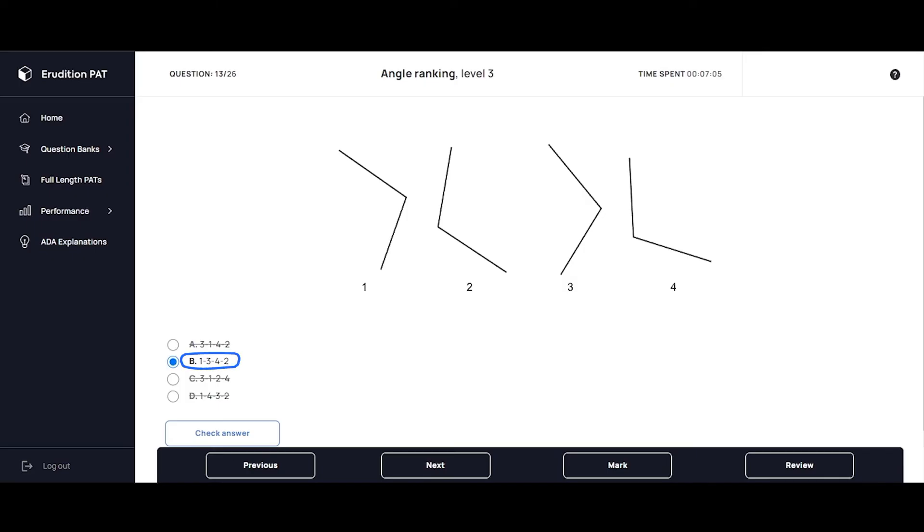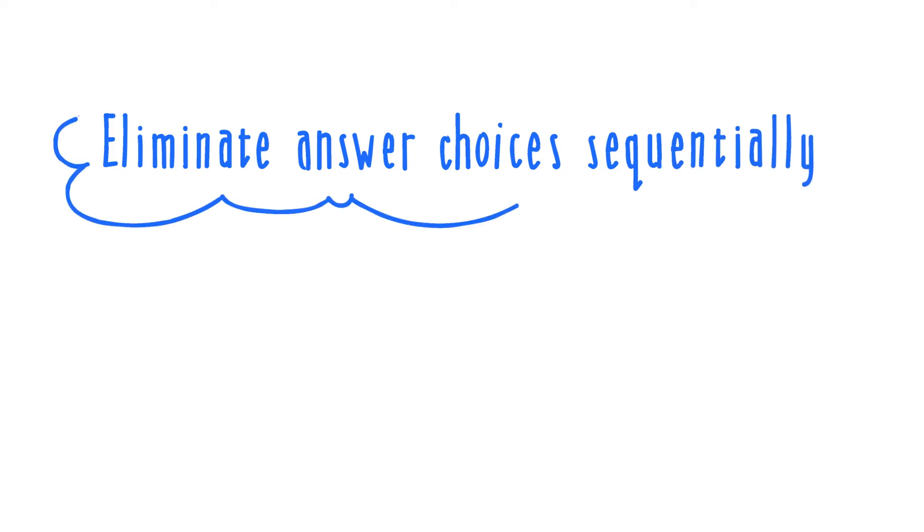Alright, so to summarize, you want to focus on using elimination. Cross out any wrong answers as you go through your process. This will help you from getting overwhelmed and confused. When you're approaching a problem, you want to start by identifying obvious outliers.